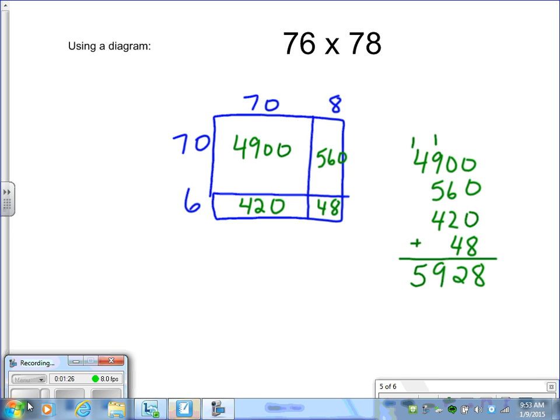Make sure your place value is lined up, and our answer is 5,928.